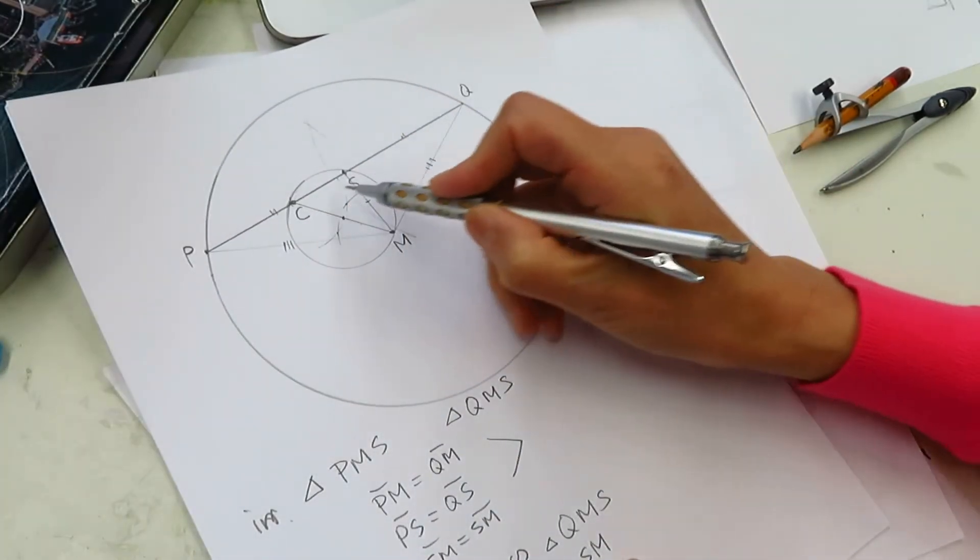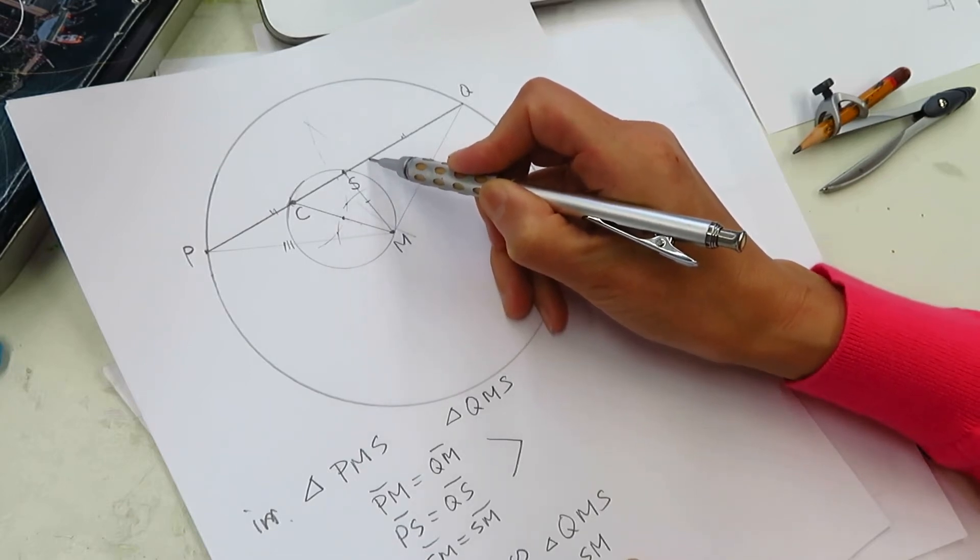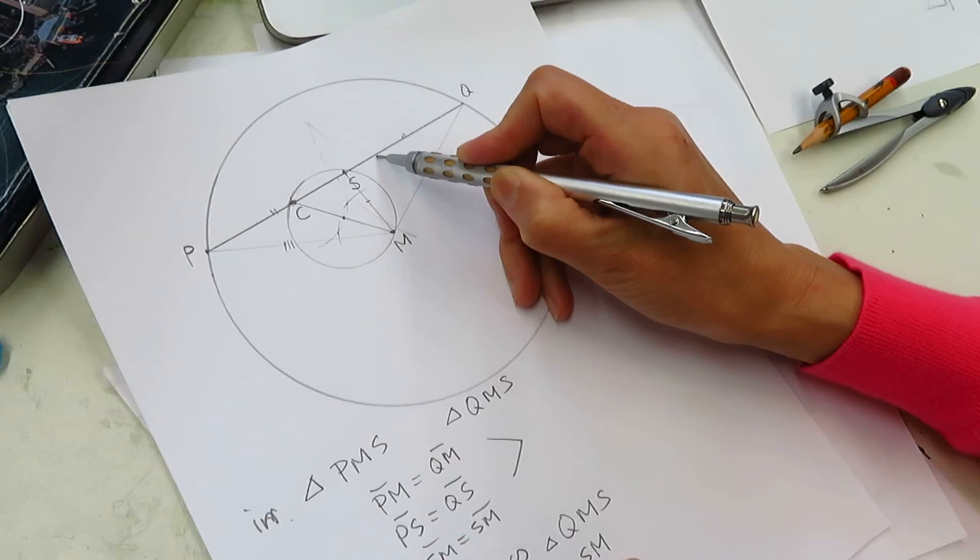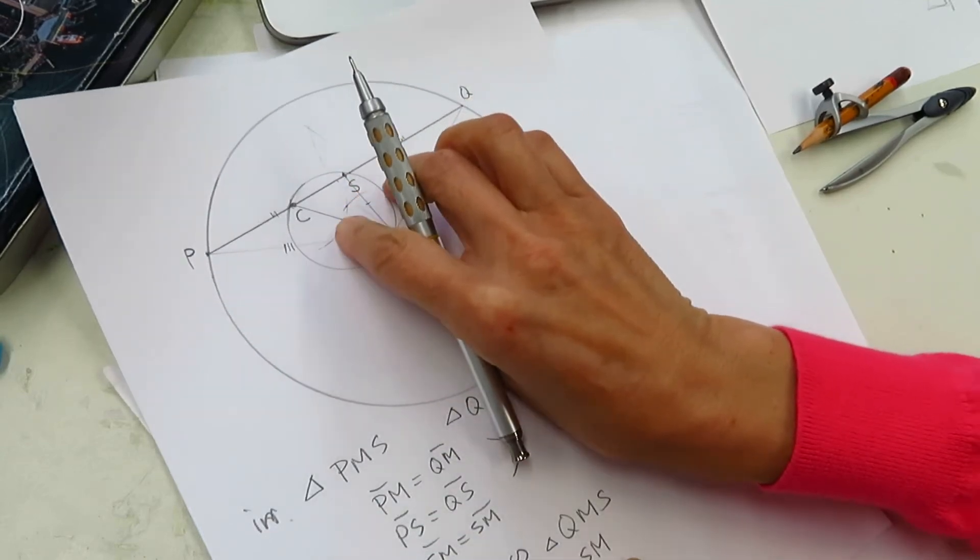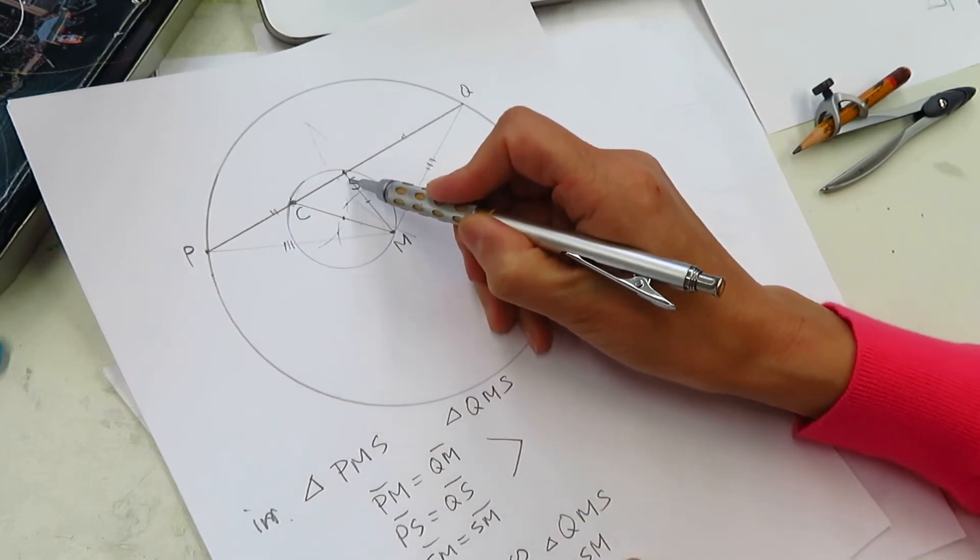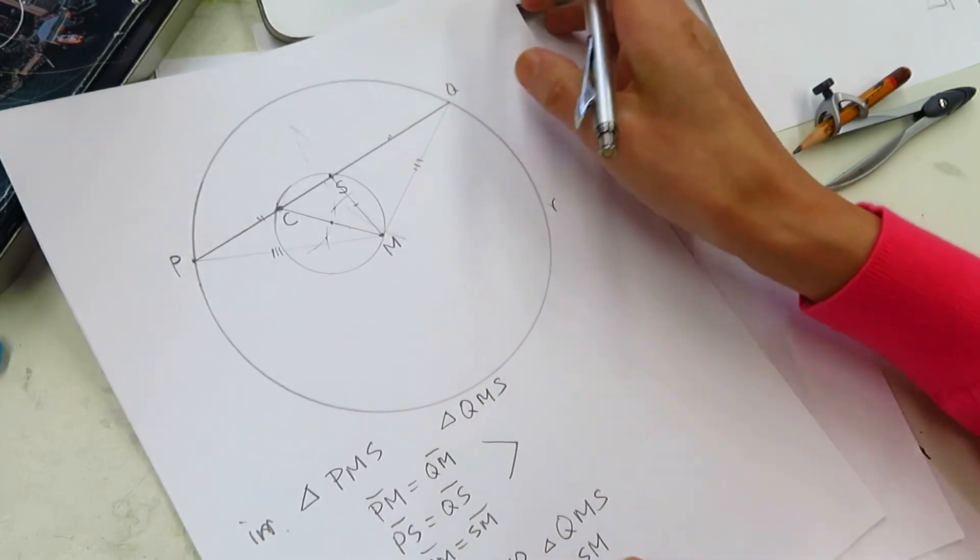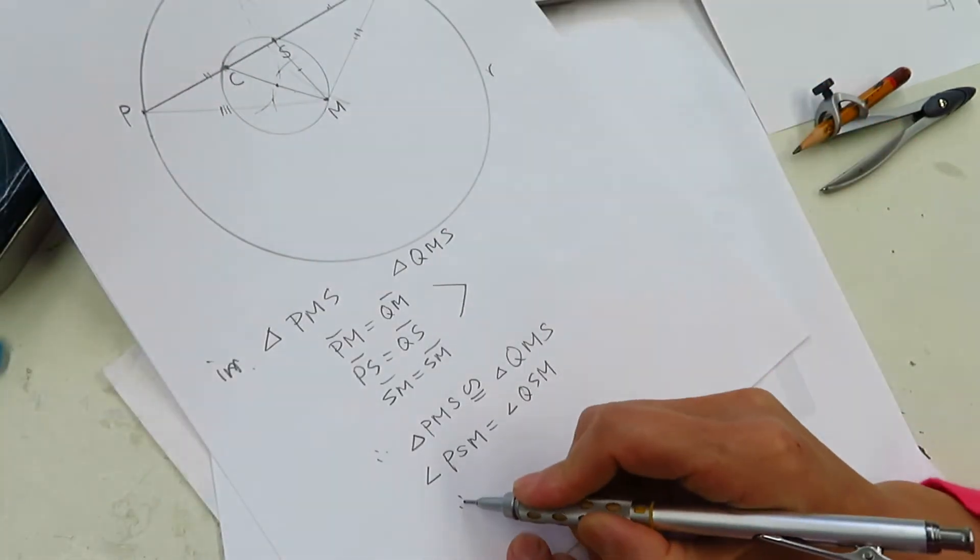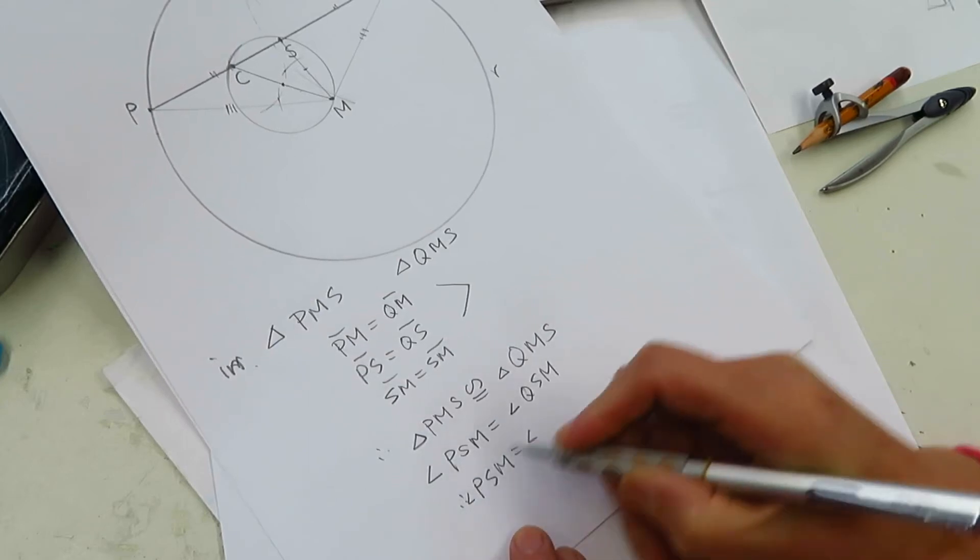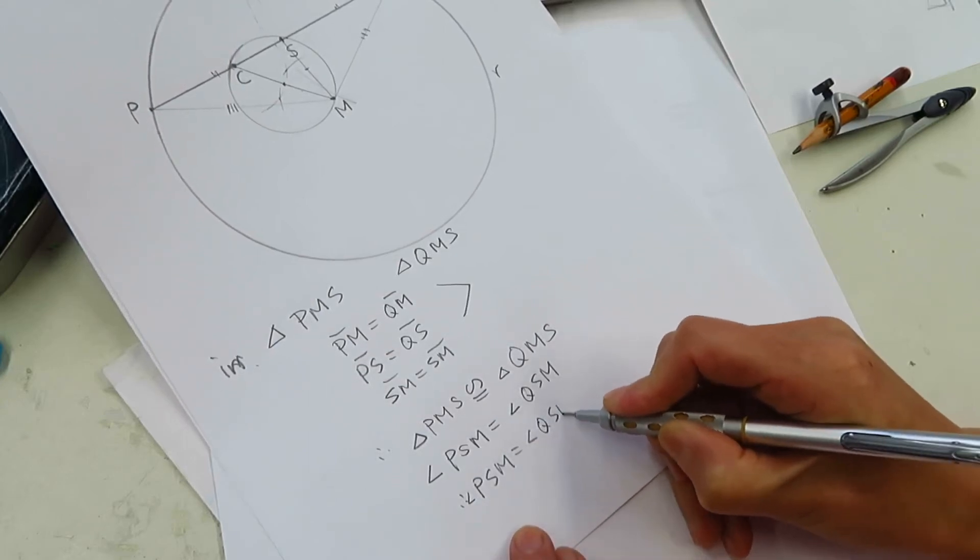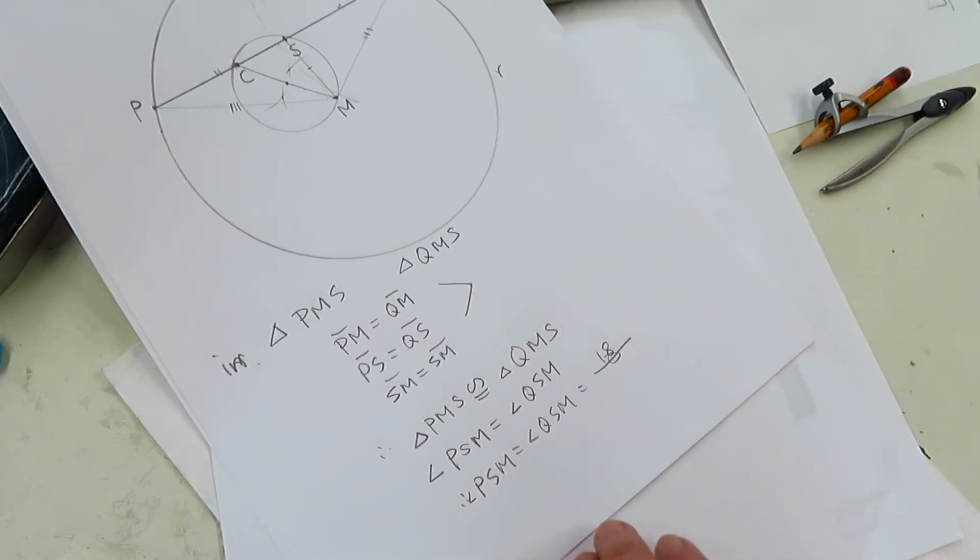And PQ is a straight line. So it's 180 degrees. PQ is 180 degrees. And 180 has two equal angles. Composed of two equal angles. So each angle is 90 degrees. Therefore,